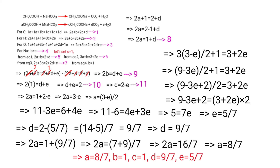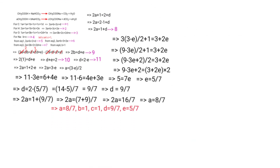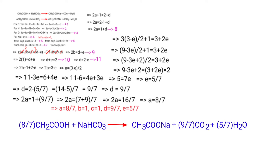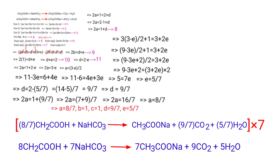Substituting the values A, B, C, D, E into the equation gives: (8/7)·CH2COOH plus NaHCO3 gives CH3COONa plus (9/7)·CO2 plus (5/7)·H2O. Multiplying through by 7 to get whole numbers: 8·CH2COOH plus 7·NaHCO3 gives 7·CH3COONa plus 9·CO2 plus 5·H2O. The equation is now balanced.